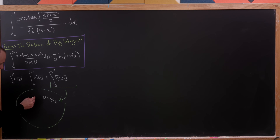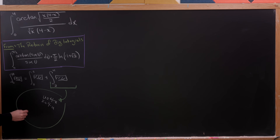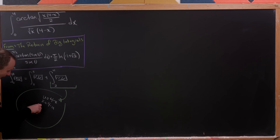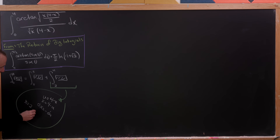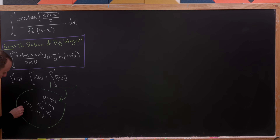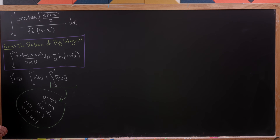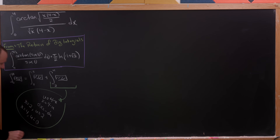That means x equals four minus u and dx equals minus du. When x equals two, u equals two, and when x equals four, u equals zero.